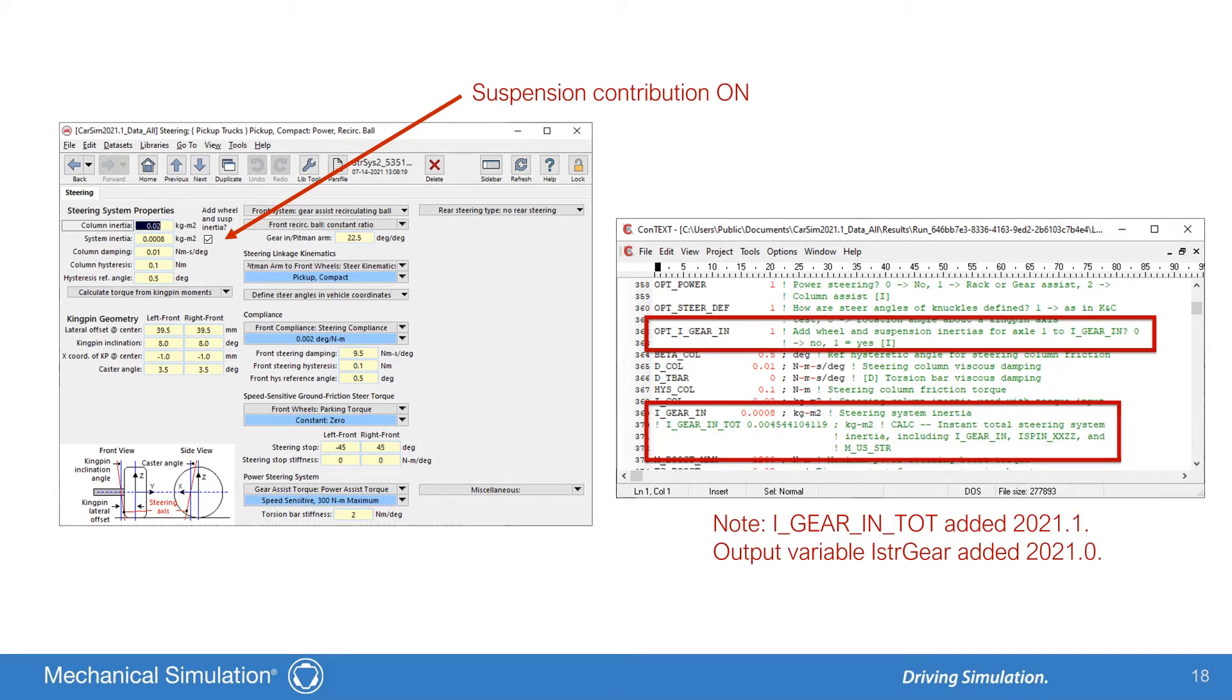When opt-i-gear-in is on, the kingpin geometry, steered unsprung mass and inertias, linkage kinematics, and steering gear kinematics are used to calculate an inertia term which represents the rotation of the steered unsprung masses around the left and right kingpin axes. This term is referenced to the steering gear input rotation and is added to the i-gear-in value you provide. This means your steering inertia value should not include the effect of unsprung masses rotating about the kingpins. The total steering system inertia, consisting of your value plus the calculated value from the suspension, is output with the output variable i-steer-gear, or the echo file keyword i-gear-in-tote. The value is in general not constant due to the kinematics. The echo file value corresponds to the value at the time the echo file was written.